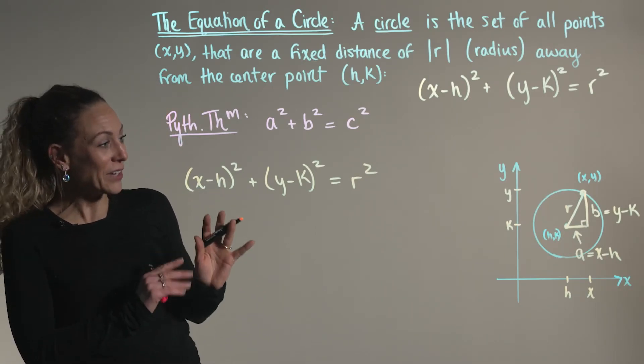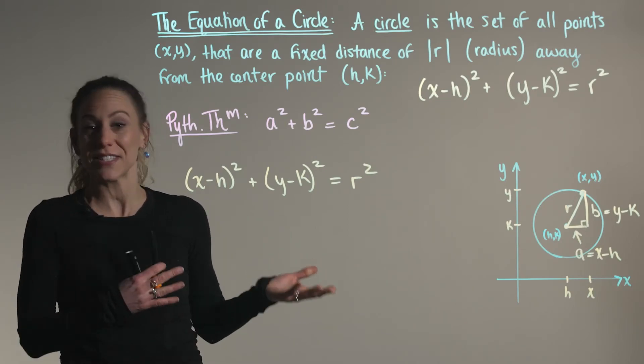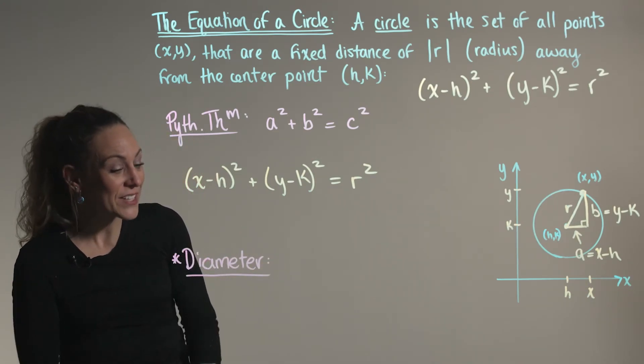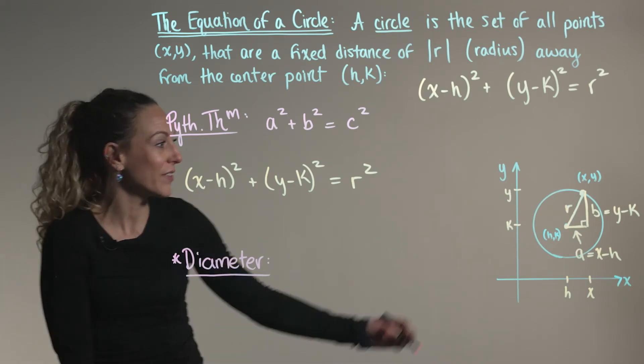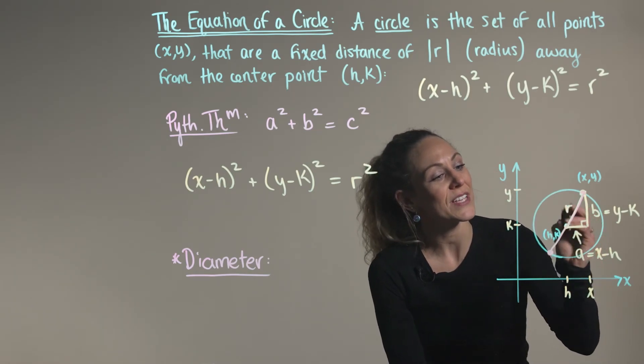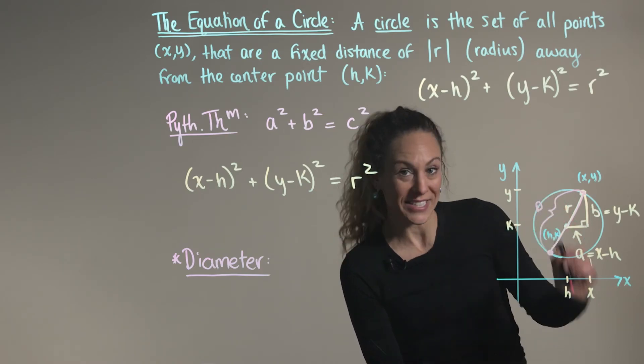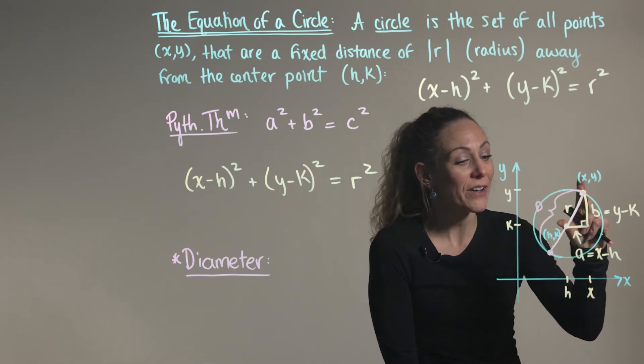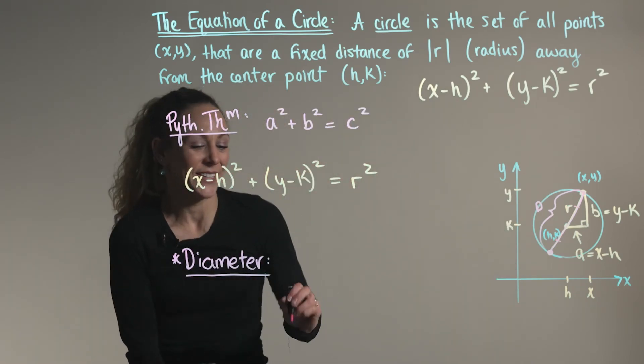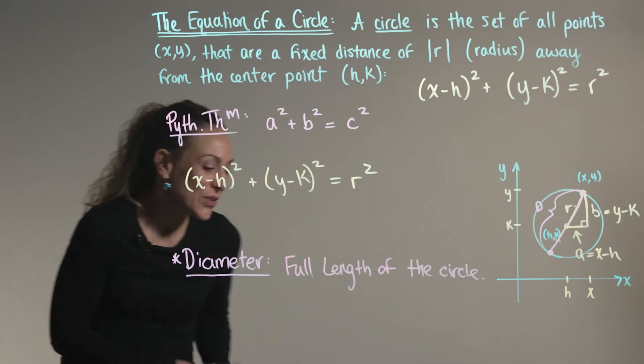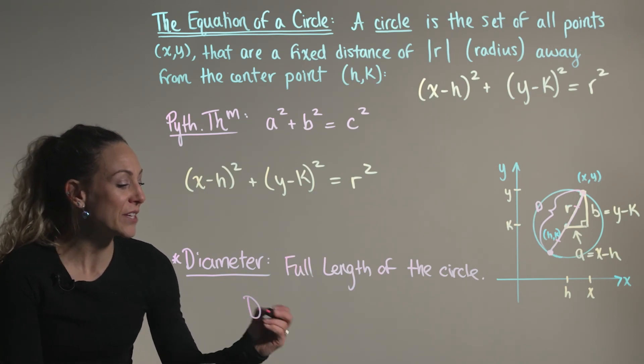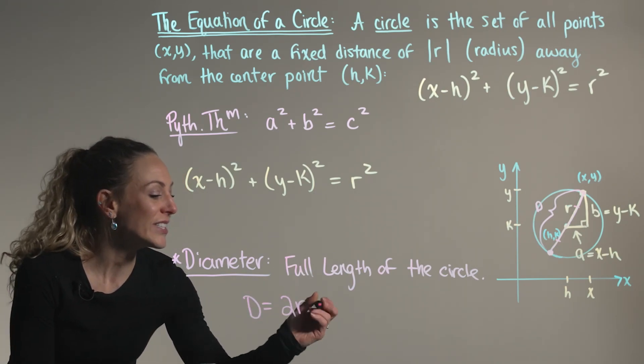Now there's one final important feature I want to point out in regards to the equation of a circle: the diameter length. The diameter of a circle is the full length of the circle, from a fixed point on our circle all the way to the other side. We can see from our graph here that our diameter is two times as large as the radius. So the diameter represents the full length of our circle, and we can relate this to the radius using the equation d = 2r.